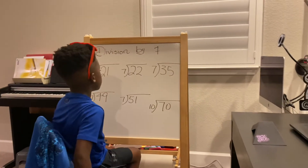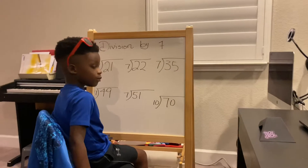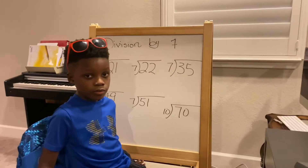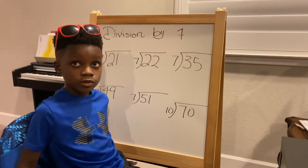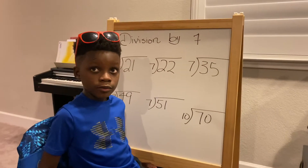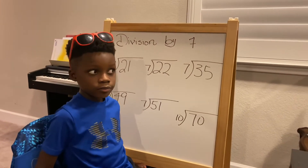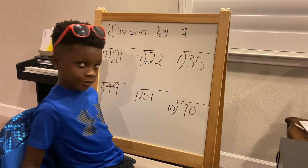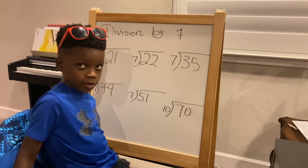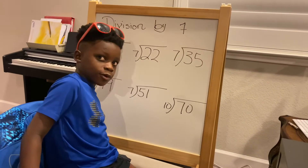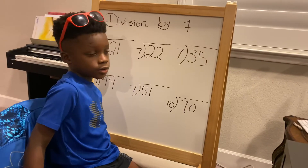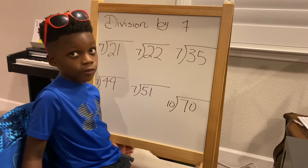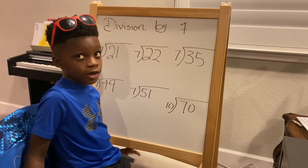Remember when I did multiplication with division? Well, I wasn't fooling around — it was for a purpose, and only one purpose: so we can divide by seven.